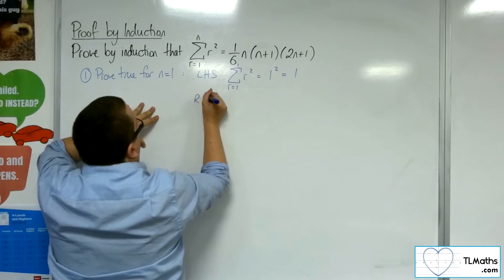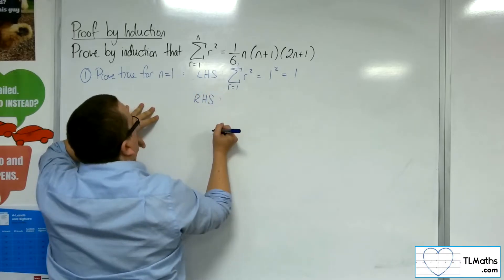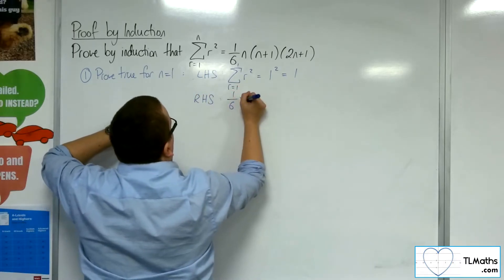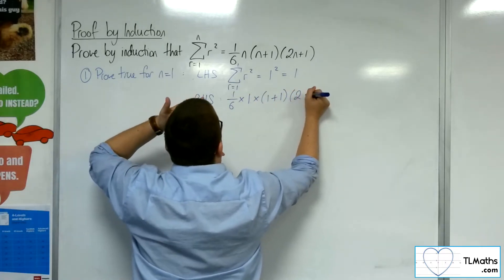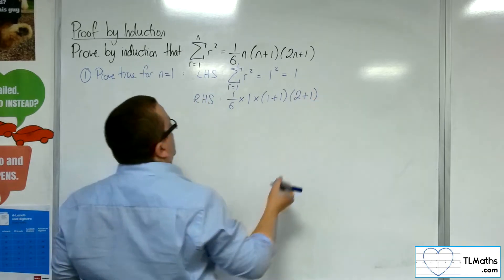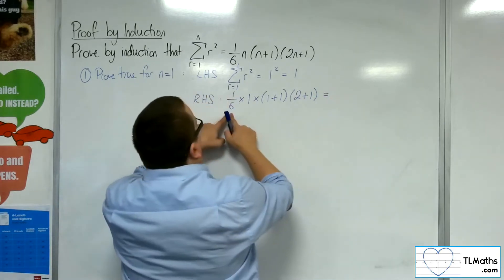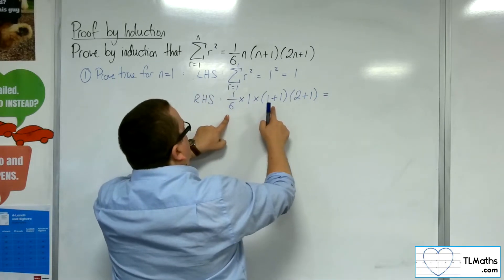The right-hand side is 1/6 times 1 times 1 plus 1 times 2n plus 1. So, 2 lots of 1 plus 1. We get 1/6 times 1 times 2 times 3.